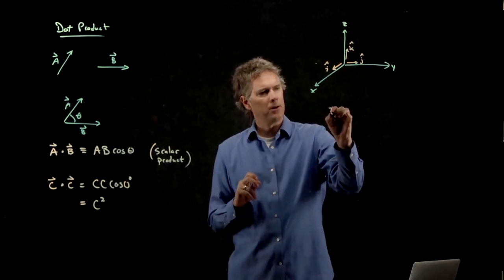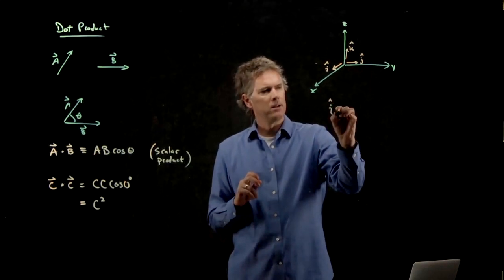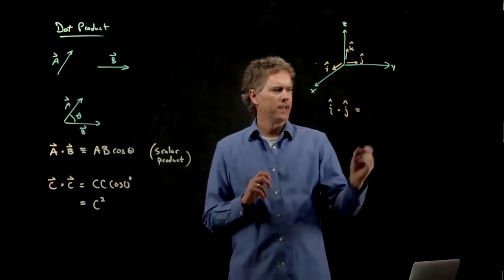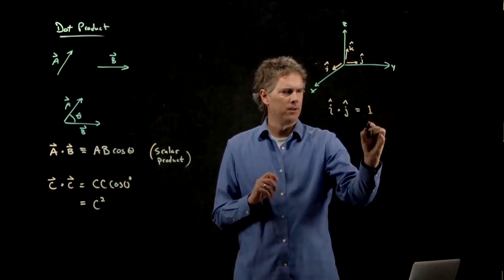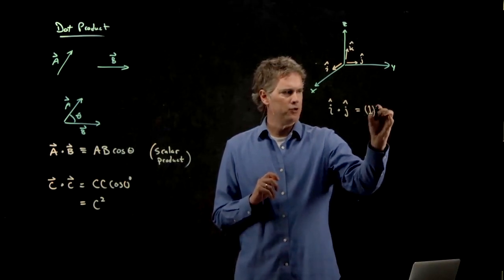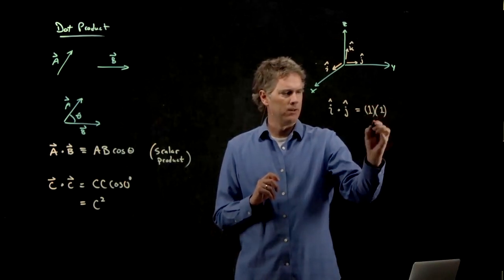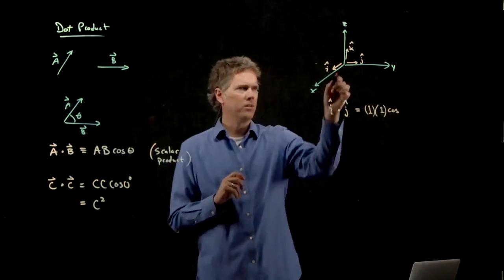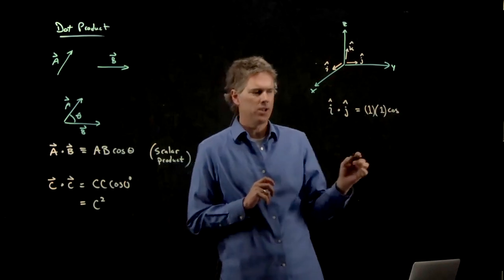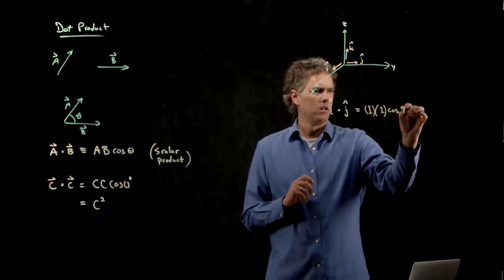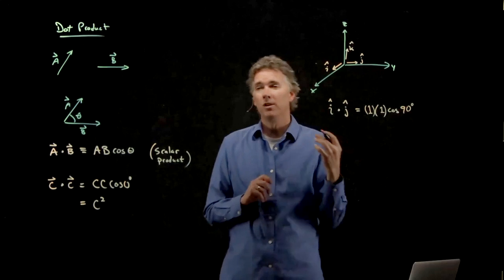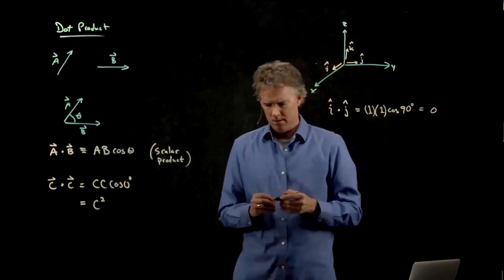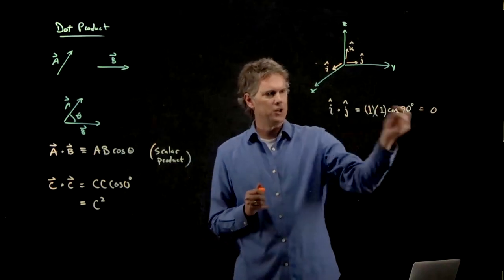So if I think about the dot product, i-hat dot j-hat, what do I get? I get the magnitude of i-hat, which is one. I get the magnitude of j-hat, which is one. And then I get cosine of the angle between them. What's the angle between i-hat and j-hat? 90 degrees. Cosine of 90 degrees is zero. And so i-hat dot j-hat is zero.